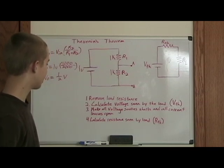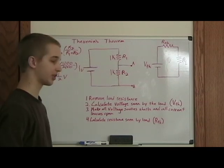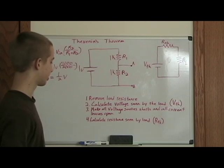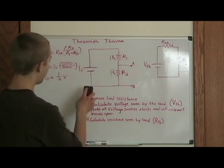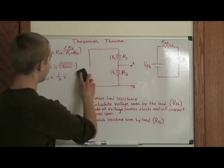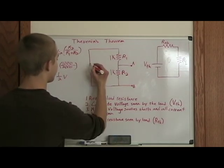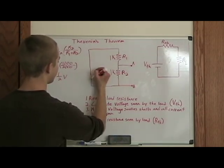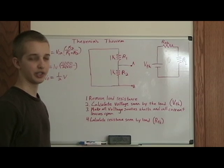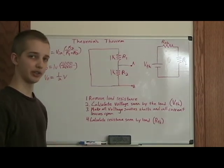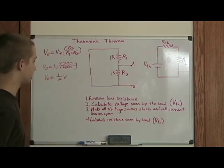Now the third step is to make all voltage sources short and all current sources open. So we'll remove this battery here and replace it with a short. Now this is assuming that your voltage source is ideal and it doesn't have any internal resistance.